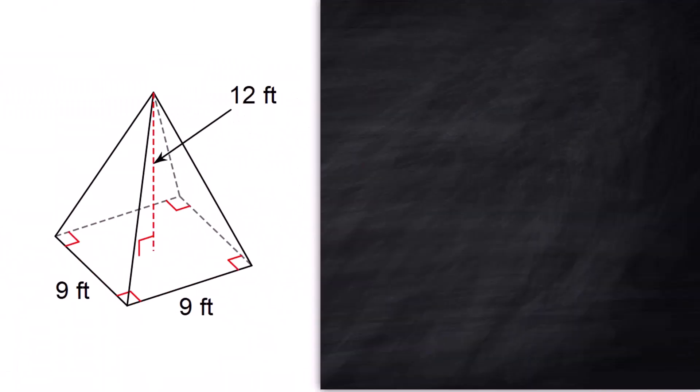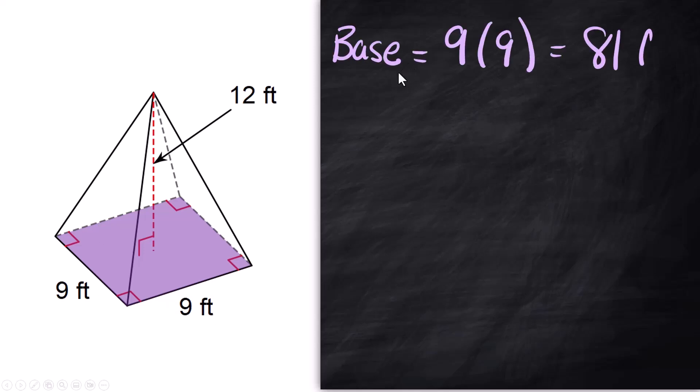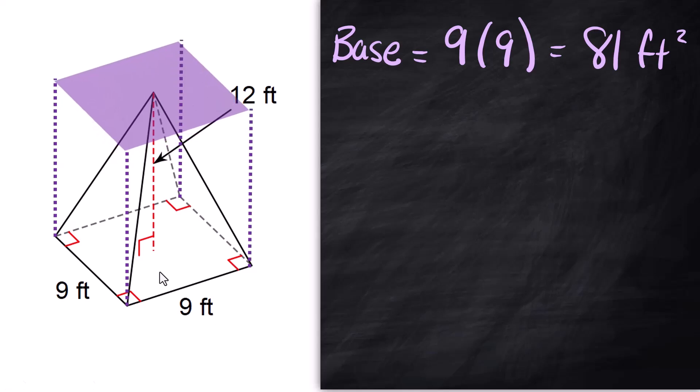You do the volume the same way as a regular cylinder and you just divide by three. All right we're going to find the volume of a pyramid and it is a square pyramid. I can say it's a square because it tells me that this side is 9 and that side is 9 and I see all these little right angles in here so I got a square on the bottom. So you got to find the area of the base which is going to be 9 times 9 length times width 81 square feet.